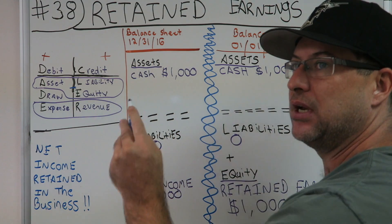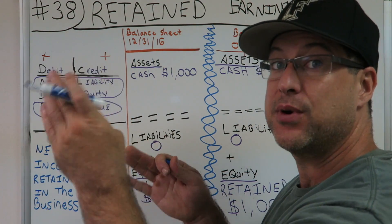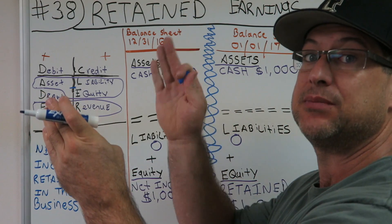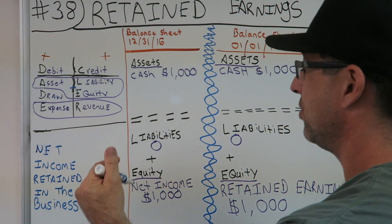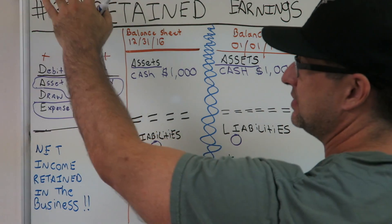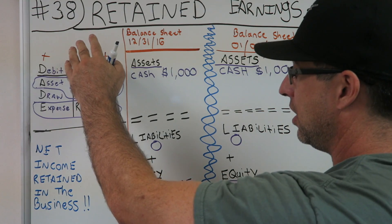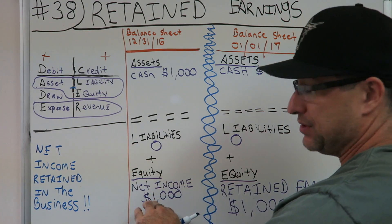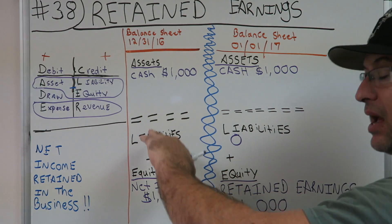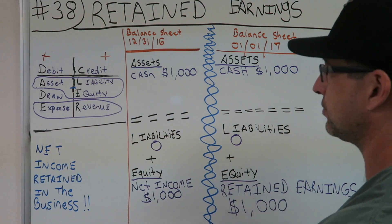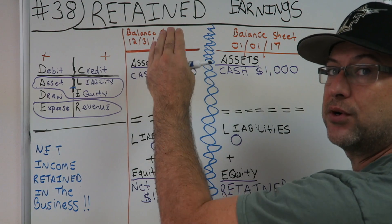Accompanying the 12/31/16 balance sheet is an income statement for the entire year — January 1st through December 31st. That income statement had a net income of one thousand dollars. We learned that net income from the income statement transfers over to the balance sheet.